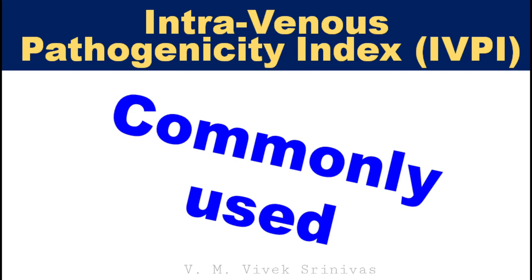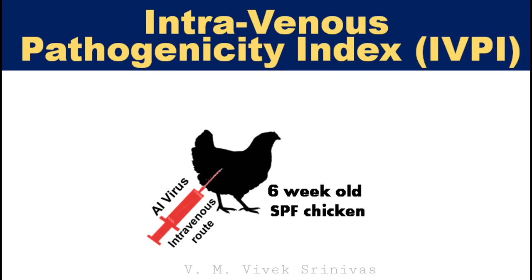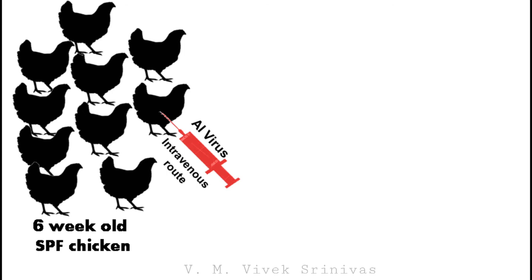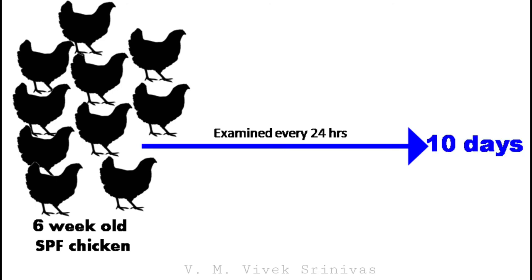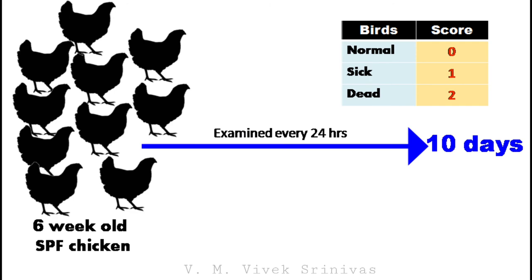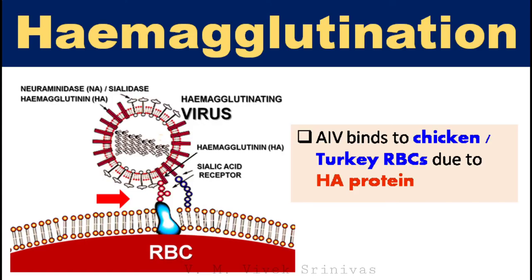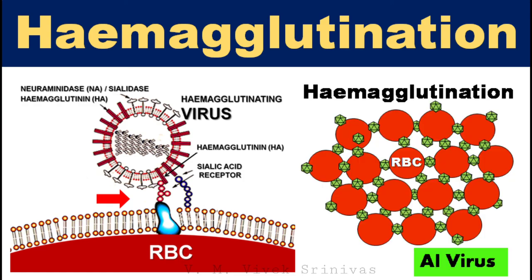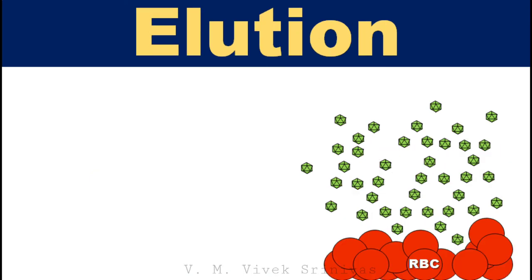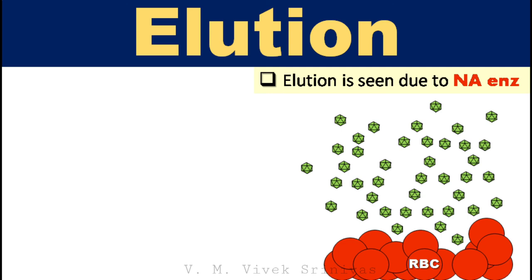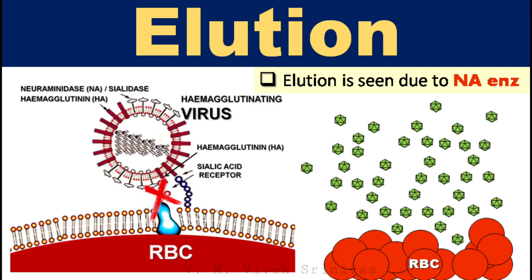Intravenous Pathogenicity Index is the most commonly used method for this virus. The virus is injected intravenously into 6-week-old specific pathogen-free chickens. Each virus is injected into a flock of 10 SPF chickens. After injection, birds are examined every 24 hours for 10 days, then scored: 0 if normal, 1 if sick, and 2 if dead. A pathogenicity index greater than 1.2 is considered a highly pathogenic strain. The virus possesses hemagglutinin glycoprotein spikes which attach to specific RBCs — chicken or turkey RBCs — forming a network of bridges between the RBCs and viruses, called hemagglutination.